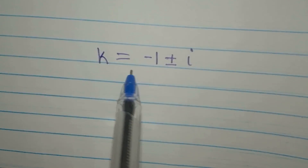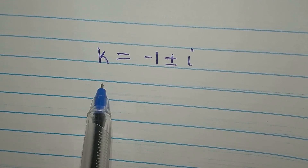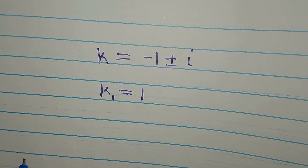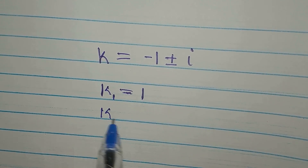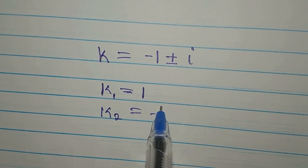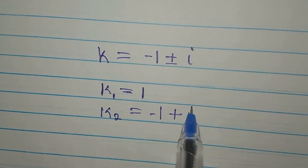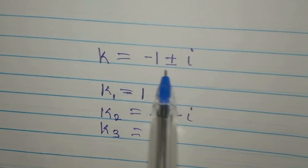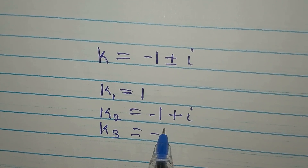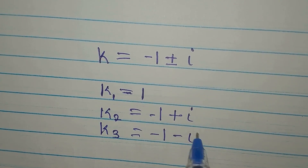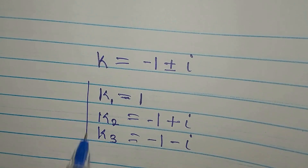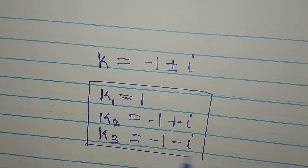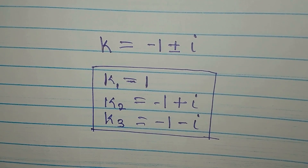Let's bring the three solutions together. We already had k₁ = 1. Then k₂ = −1 + i, and k₃ = −1 − i. So these three are the solutions to the given equation. Thank you for watching.